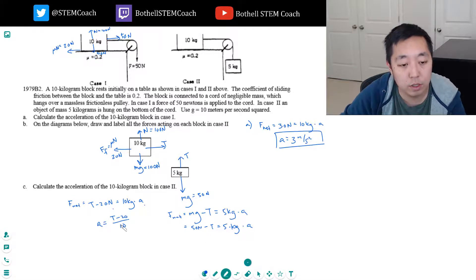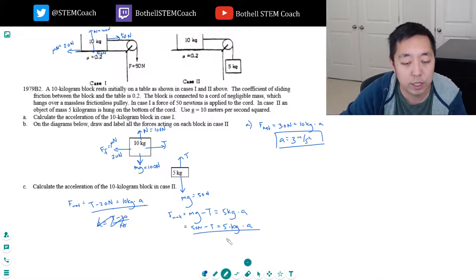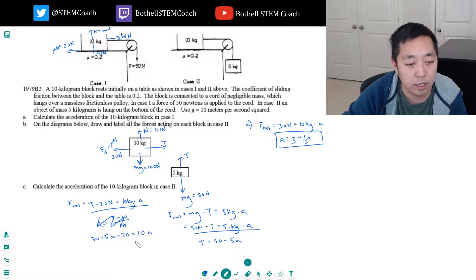So we can solve. We have this equation here and we have this equation here. And I can solve for t and plug it into here. This is t equals 50 minus 5a. And I plug it into here. So I get 50 minus 5a minus 20 equals 10a. So 15a is equal to 30. And so a is equal to 2 meters per second squared.